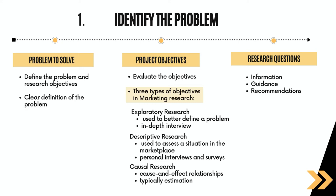Project Objectives: There are three types of objectives that can be deployed in marketing research. First, exploratory research is used to define a problem or scout opportunities better; in-depth interviews and discussion groups are commonly used. Second, descriptive research is used to assess a situation in the marketplace; methods include personal interviews and surveys. Third, causal research is for testing cause-and-effect relationships, typically through experimentation.